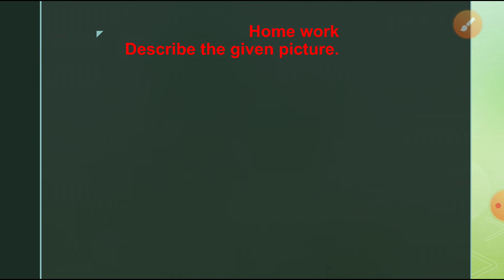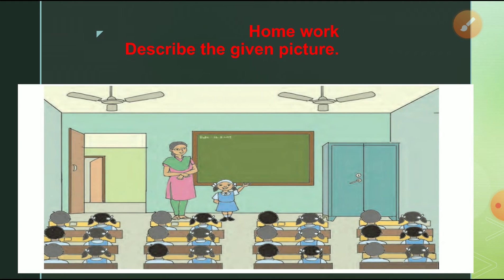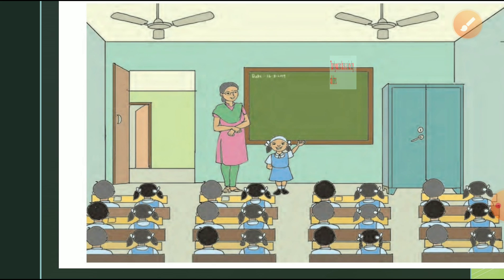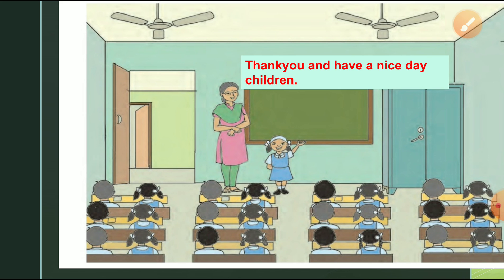Now, homework for you, students — describe the given picture. You have to describe the given picture. Whatever is in the picture, you have to describe it. Like: This is my classroom. There is a big blackboard on the wall. Our teacher writes on it with a chalk. The teacher has a table to keep her books on. Like this way, you have to describe the given picture. Thank you and have a nice day, children. Thank you, miss. Thank you.